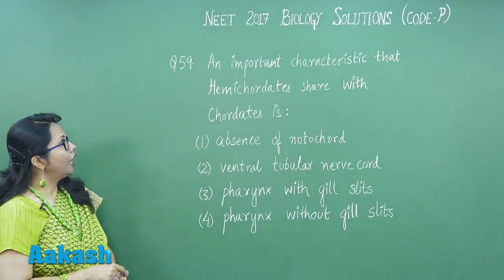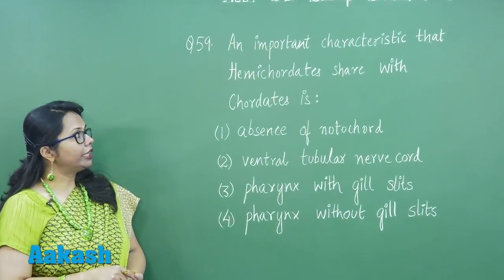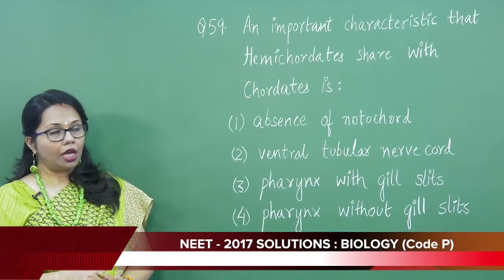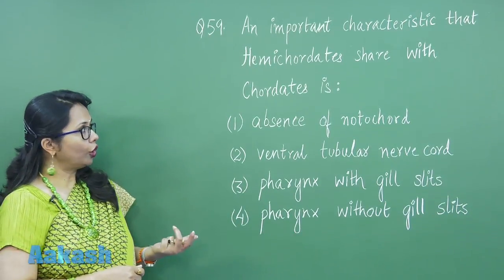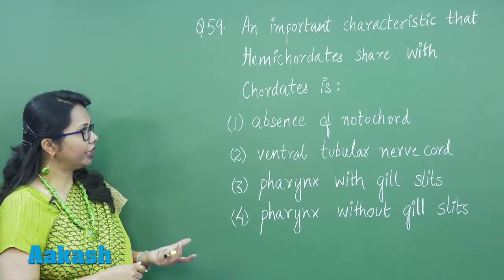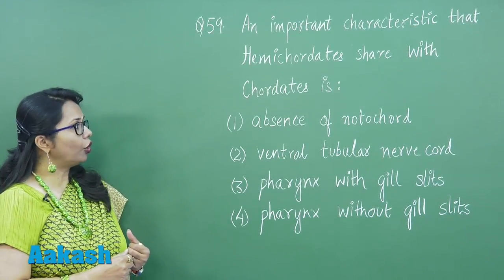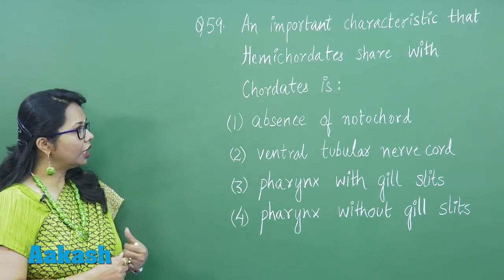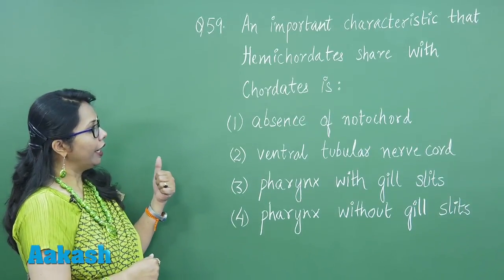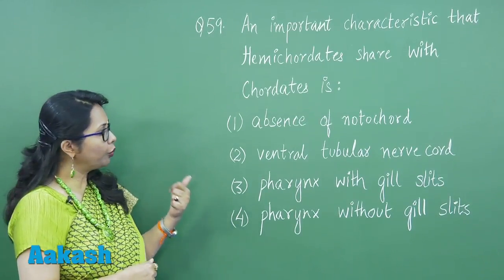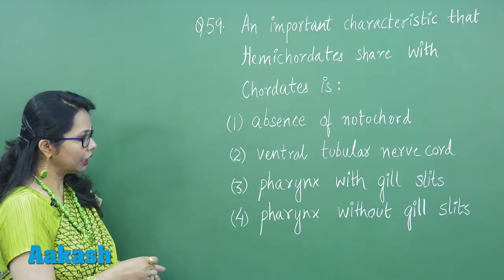Question 59: An important characteristic that hemi-chordates share with chordates. Hemi-chordates classify with non-chordates because they don't have a notochord, but still they have some chordate features. Out of the four options, we can see that hemi-chordates and chordates both have a pharynx perforated with gill slits.